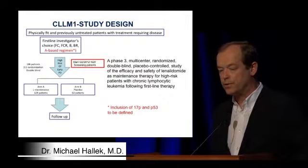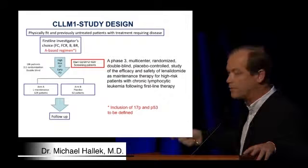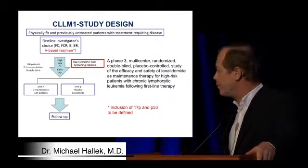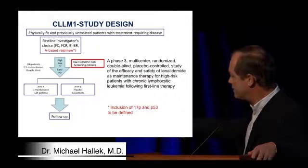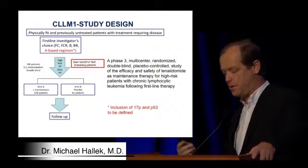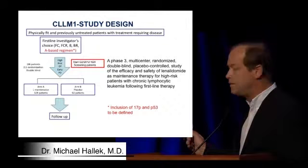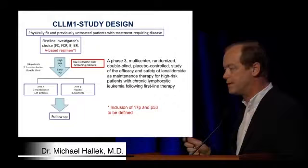The CLL-M1 study has just started. Since we don't yet know which induction regimen — FCR, bendamustine, or bendamustine plus rituximab — is best, as CLL-10 data are still awaited, we allow all these modalities and then do a randomized comparison. For high-risk patients only, in a 2:1 randomization, we test lenalidomide maintenance therapy to improve outcomes. This is the novel strategy for the high-risk group. In a younger patient eligible for transplant, I would also select those patients for transplantation protocols.